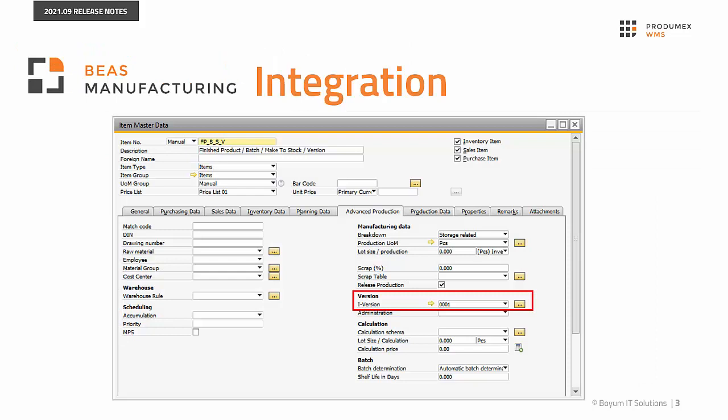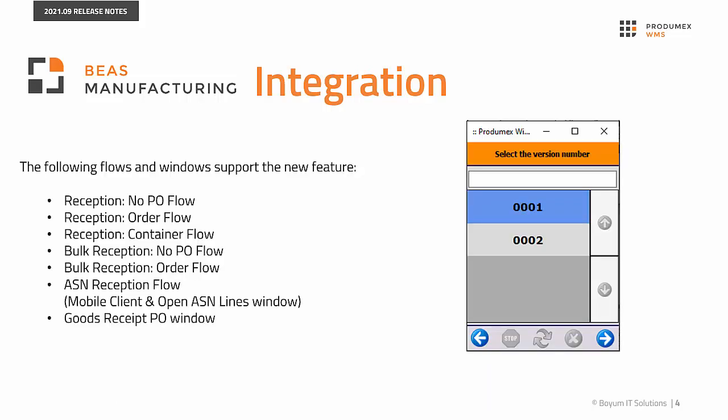Within the framework of the Ballast Manufacturing integration, PradoMax WMS keeps supporting the logistical needs of Ballast Manufacturing with version control item support during reception flows. The new feature supports items managed by batch number or serial number. During the flows, the mobile client displays a new Select the Version Number screen and the system uses the version numbers specified in Ballast Manufacturing.